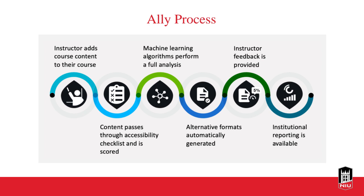Here's the process involved in the conversion of content to alternative formats: we add content to our course, the content passes through the checklist, it's scored, and then we get a full analysis. The alternative formats are generated automatically. We get instructor feedback so that we can improve the accessibility of the documents, and we also have institutional reporting available.